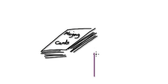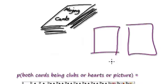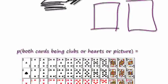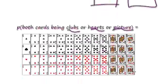See if you can do this Venn diagram problem. Given a packet of cards, we're going to pick out two cards at random. What is the probability that both of these cards will be clubs, hearts, or picture cards?